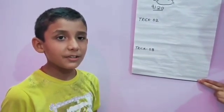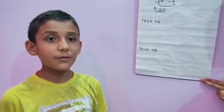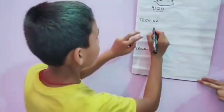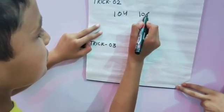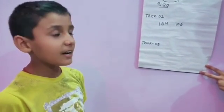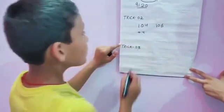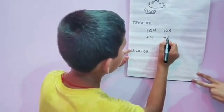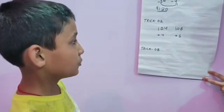Trick number 2: we take numbers near 100 but greater than 100. I take 104 and 106. We count the difference between 100 and 104, which gives 4, and between 100 and 106, which gives 6. Then we do cross addition.